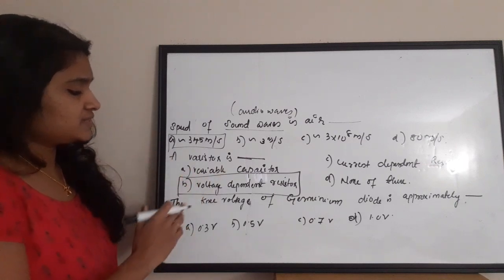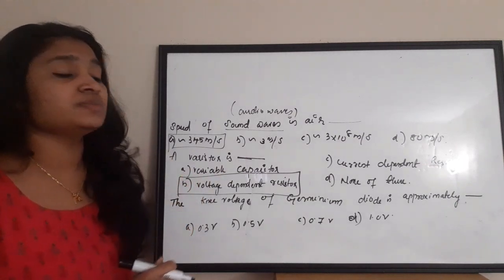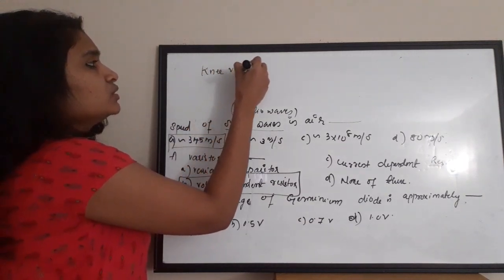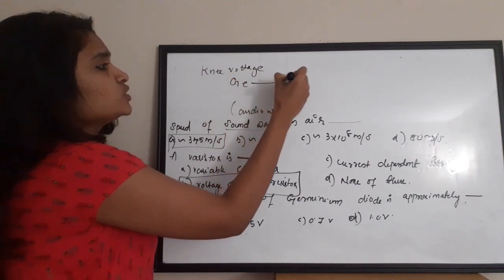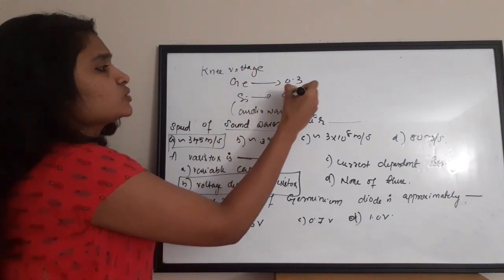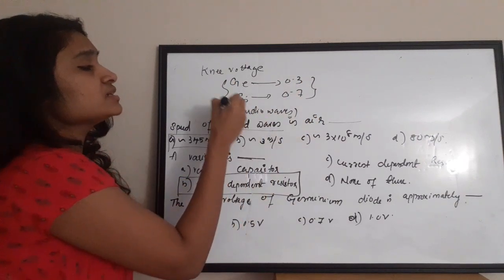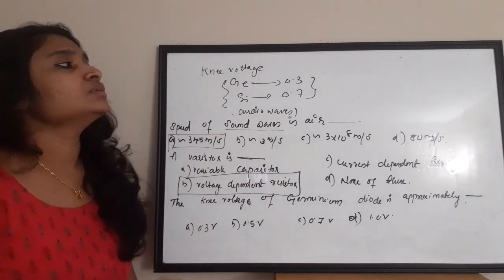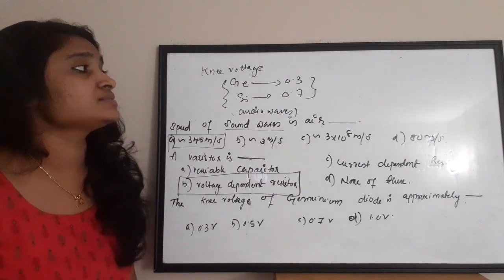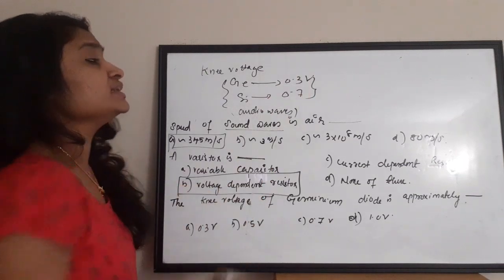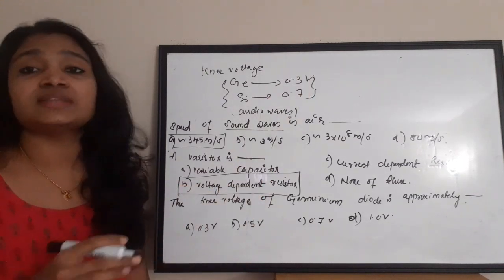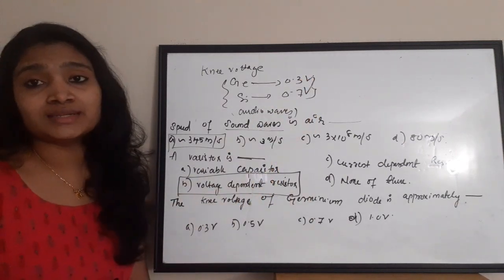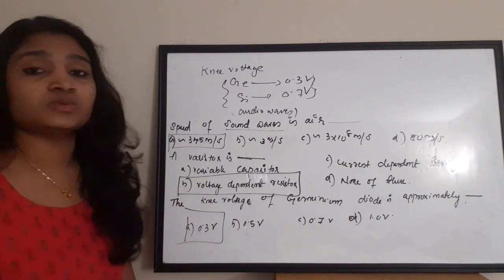Next question: the knee voltage of a germanium diode is approximately — The knee voltage for a germanium diode is approximately 0.3 V and for a silicon diode is approximately 0.7 V. For a germanium diode to start conducting, 0.3 V is required. So the correct answer is 0.3 V, which is option A.